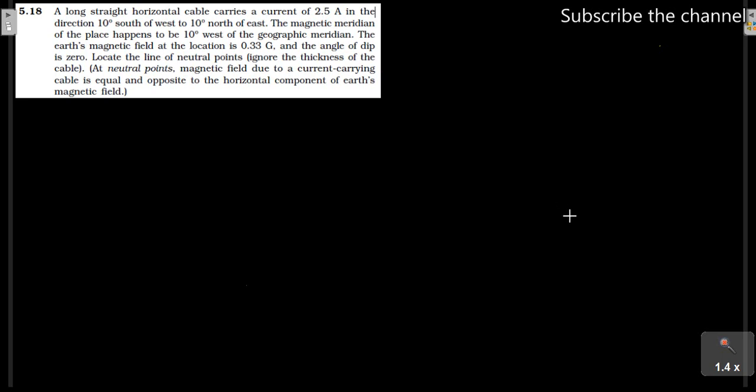A long straight horizontal cable carries a current of 2.5 Ampere. How much current is here? I is equal to 2.5 Ampere. In the direction of 10 degrees south of west to 10 degrees north of east.